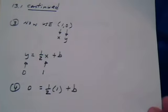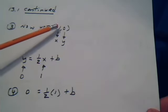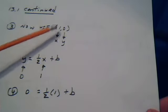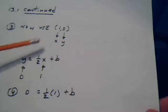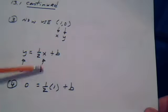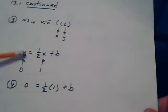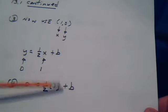Now we just need to find the b. So you use the point they gave you. The first coordinate is the x, the second coordinate is the y. Make your replacements. This x is a 1. This y is a 0. Now solve for b. Get that b by itself.